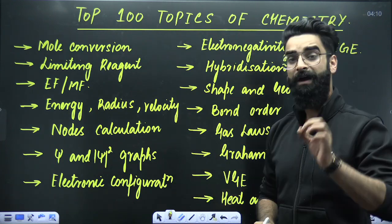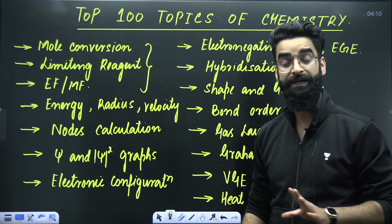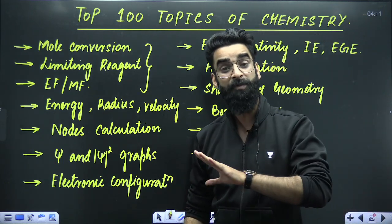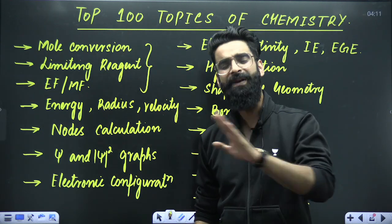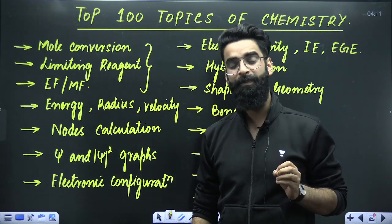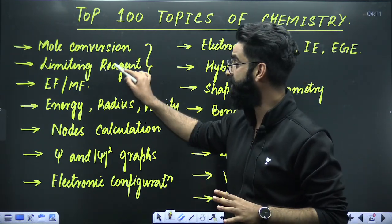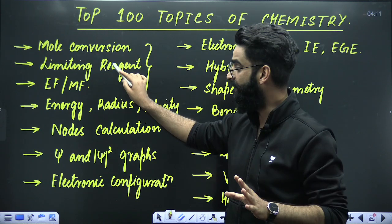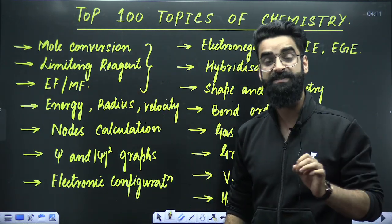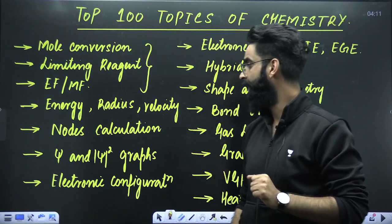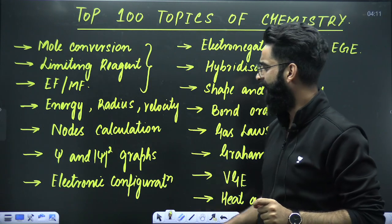Starting with the mole concept — in the mole concept, there are three topics to prioritize. That does not mean you leave any topic; you have enough time to complete the chapter and cover all problem patterns. But your priority should be these three topics: mole conversion, limiting reagent, and empirical and molecular formula. These are the three topics you are not supposed to skip at any cost.